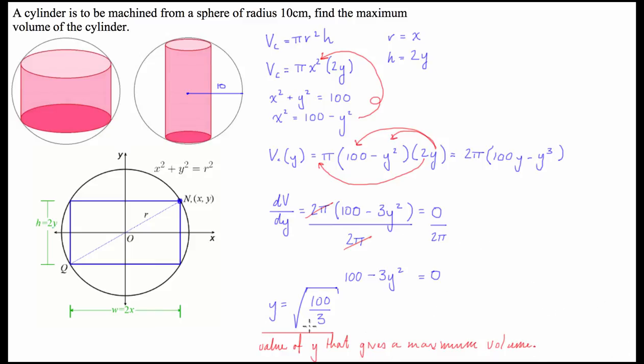So, basically, what we then have to do is we're just going to define the maximum volume. We're going to substitute the square root of 100 over 3 back into our volume in terms of y formula. And that will give us what our volume is. So, let's do that.